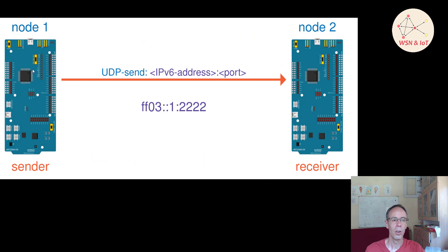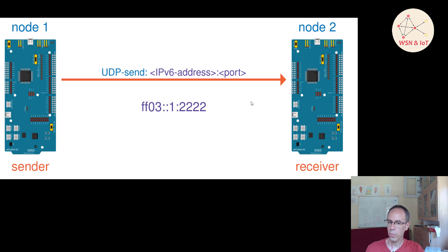We will use the API to send a UDP package from one node to another. The scenario is: node one is the sender and node two is the receiver. A UDP send consists of an IPv6 address and a port number — we'll use port 2222. Since we don't know the IPv6 address of node two in advance, we'll use the broadcast address ff03::1.